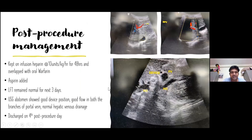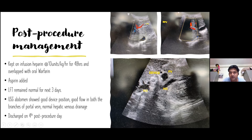Post-procedure, the child was kept on heparin infusion at 10 units per kg per hour for 48 hours, overlapped with oral warfarin, and oral aspirin was also added. LFT was repeated for three consecutive days and was normal. USG abdomen was done — the left and right portal venous branches are visible; the right branches, initially slightly atretic, became normal after occlusion of the abnormal connection. There was no apparent portal hypertension. The device position is correct — the IVC is completely unobstructed, and the device is not occluding the portal venous system or the IVC.